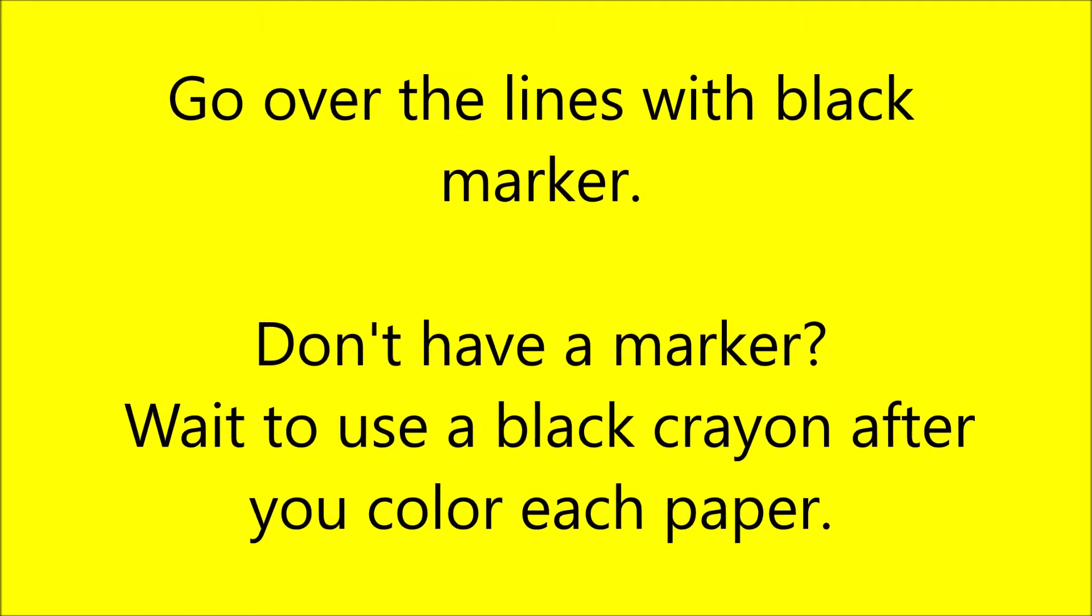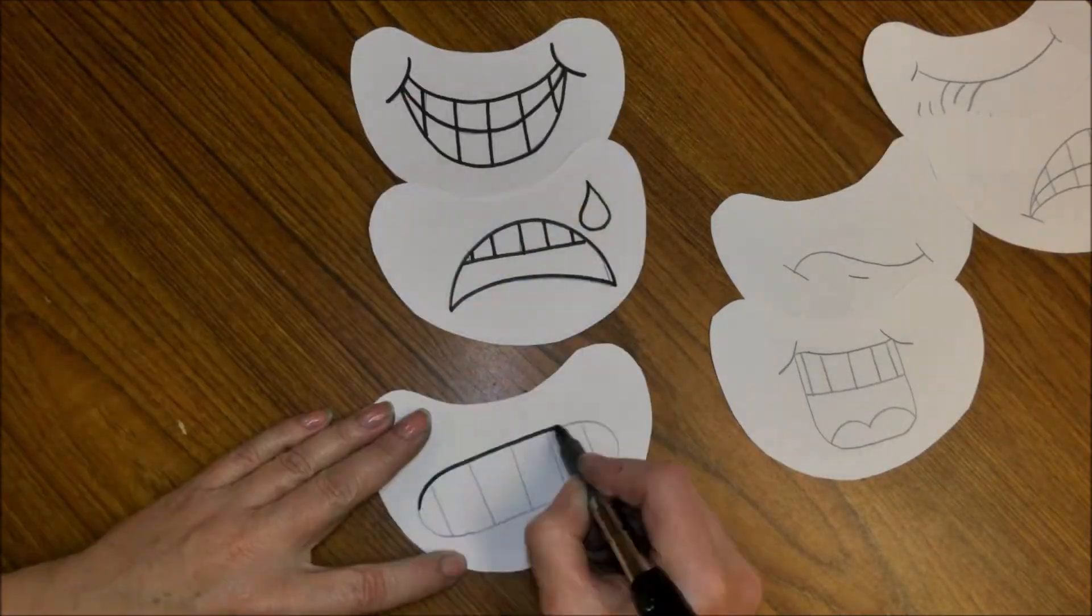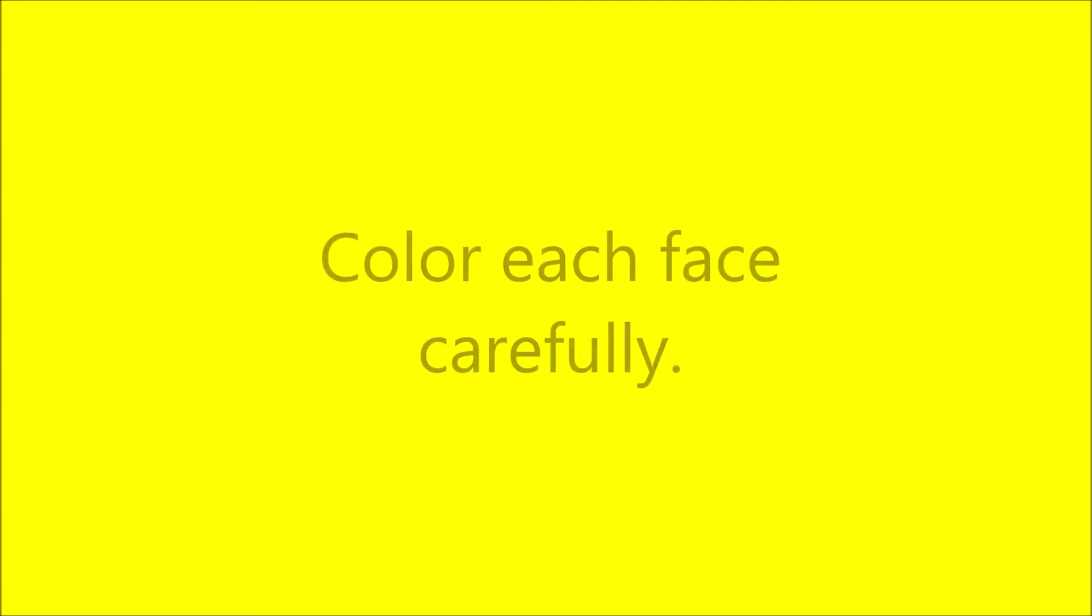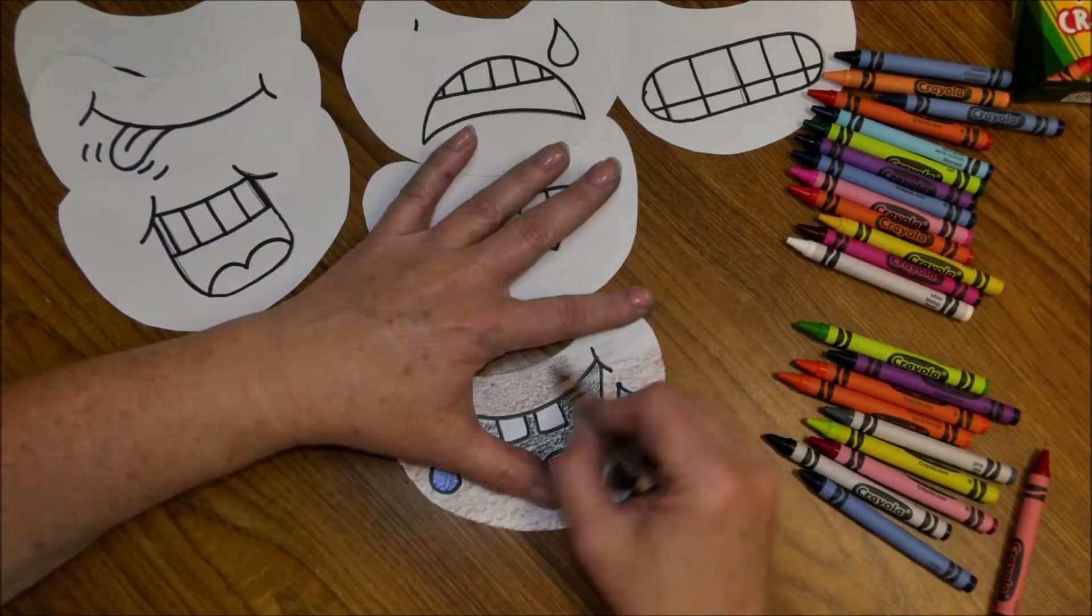The next step is to go over the lines with a black marker. Don't have a marker? Wait till after you've colored your emoji and go over it with a black crayon. Now carefully color each face that you made. Don't forget to color the skin color.